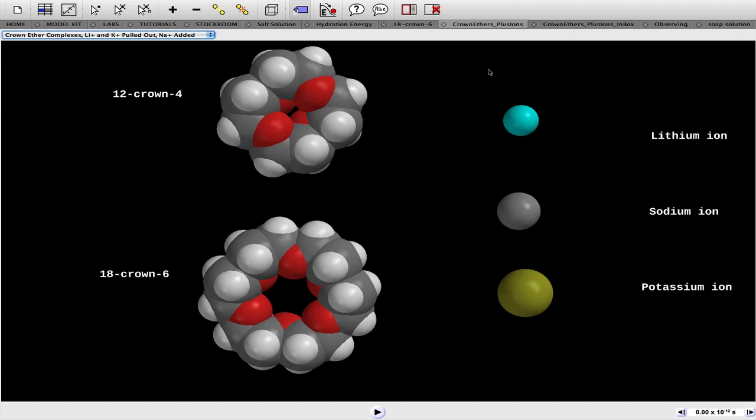The next activity in the eResource is to predict the selectivity of metal ion binding. We've got the two crown ethers here, and we've got three different metal ions of different radii. If we select the lithium ion and hold the control button, right-click and drag, we can see that the lithium ion is too small for that 18-crown-6 ether, and can fit okay in the 12-crown-4. The sodium ion is really just a bit too small for the 18-crown, and too big for the 12-crown-4, and so on.